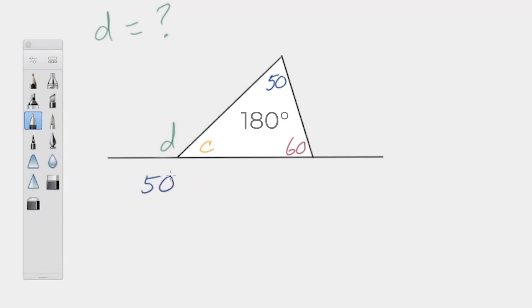So if we write that, we can write an equation for that. So 50 plus 60 plus C gets us to 180 degrees. And then if we combine terms here, we get 110 plus C equals 180. We subtract 110 from both sides, and we get C equals 70.